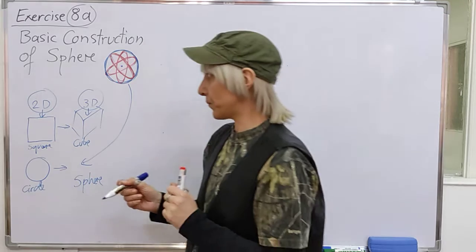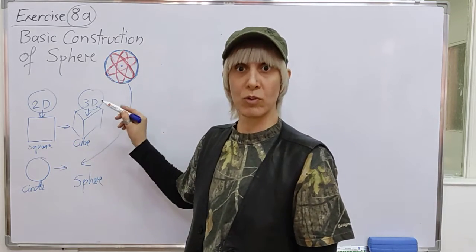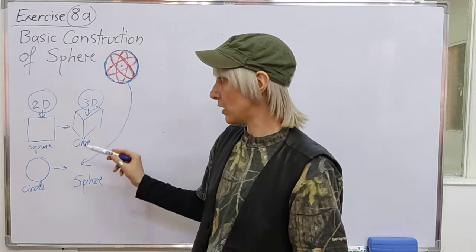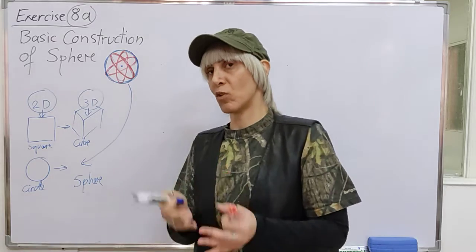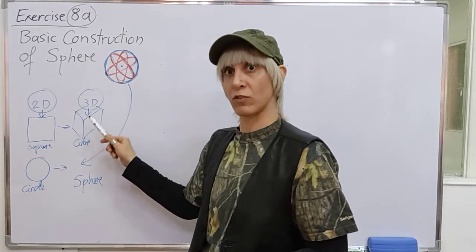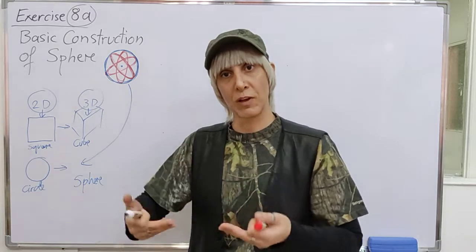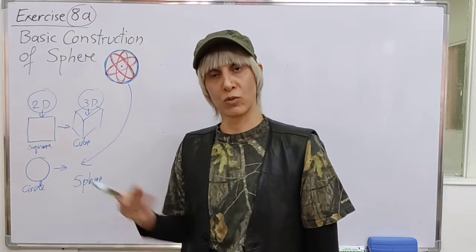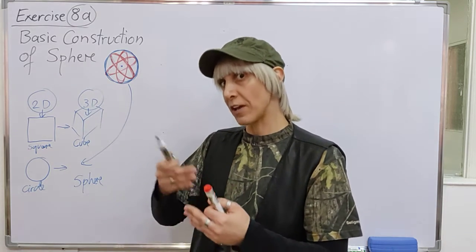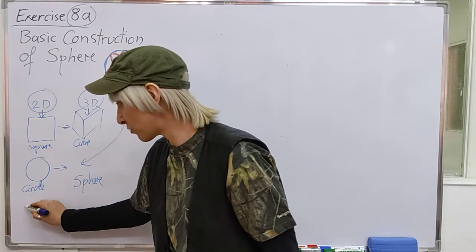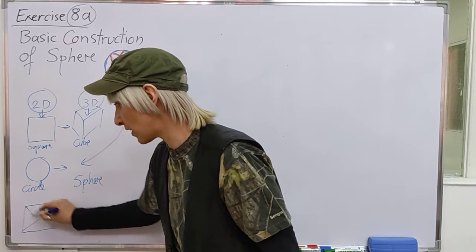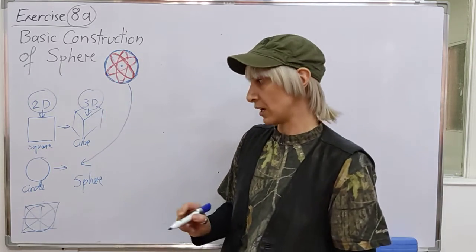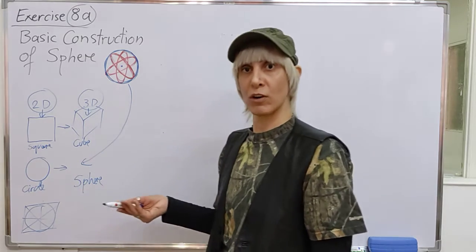We did quite a few drawings with cubes. In the previous exercise, exercise 7, we even made a little more difficult objects based on cubes that we developed. Now, the circle — we already talked about how to draw a circle in perspective, which involved first drawing a square, then diagonals, then finding the four points, and then drawing the circle. So this is the procedure to draw it in perspective. You already know that.